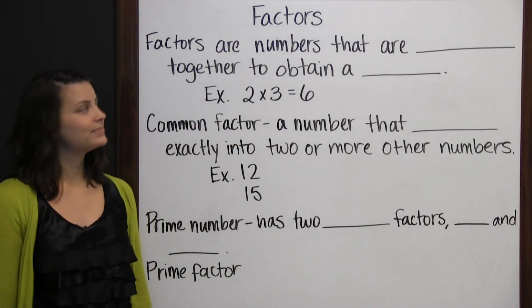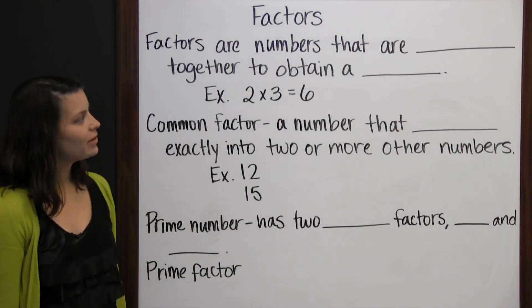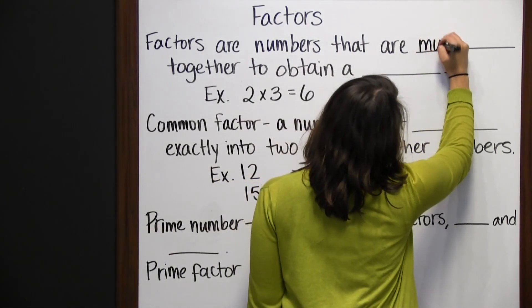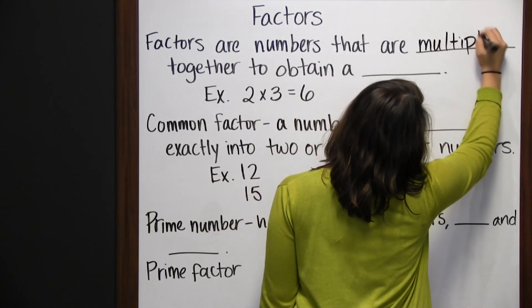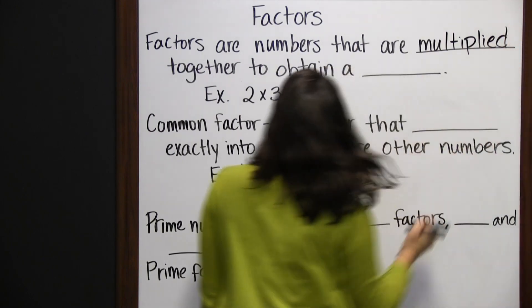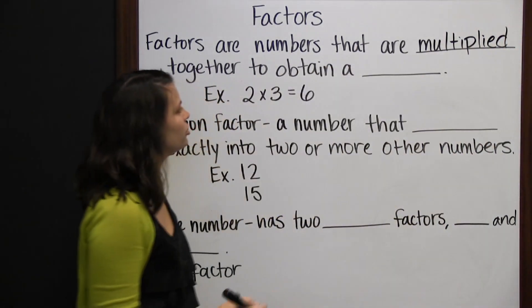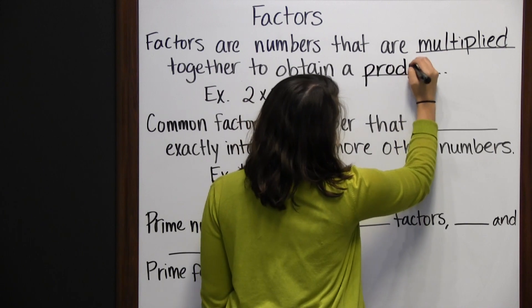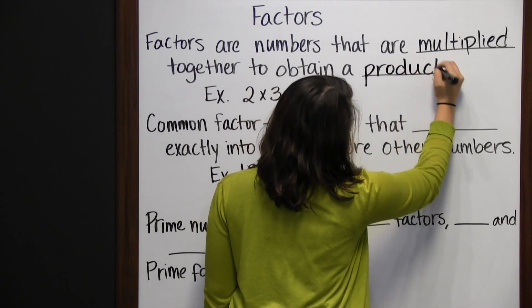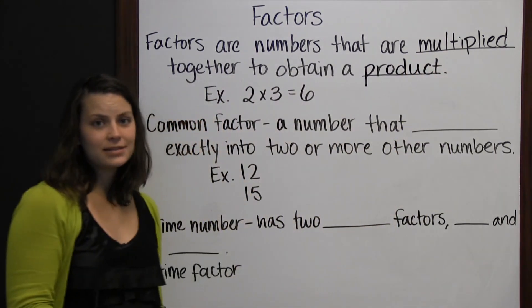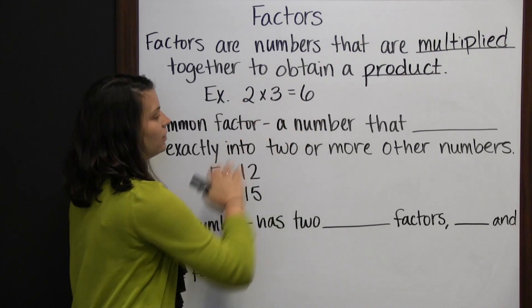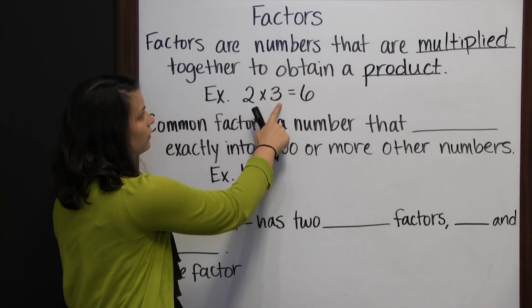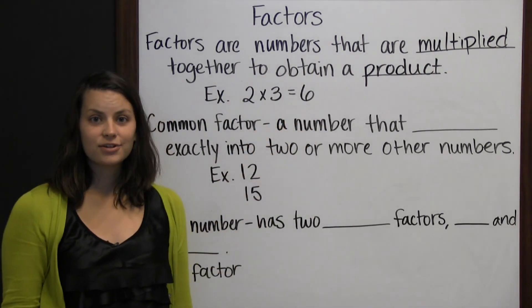Factors. Factors are numbers that are multiplied together to obtain a product. For instance, in 2 times 3 equals 6, 2 and 3 are the factors.